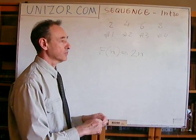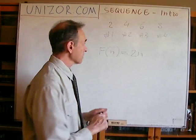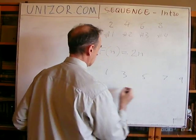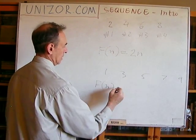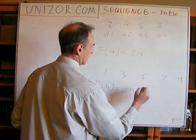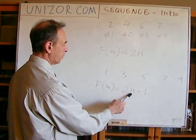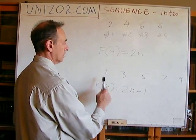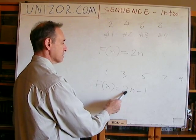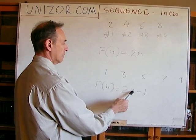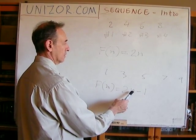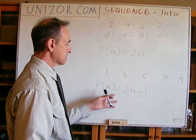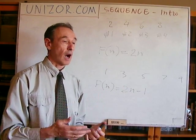Another simple formula is all odd numbers: one, three, five, seven, nine — and the function would be 2n minus one. Indeed, if you put n equals one, you have two minus one equals one. For n equals two, two times two is four minus one equals three. Three times two is six minus one is five. Four times two is eight minus one is seven, etc. So this is the formula for all odd numbers.